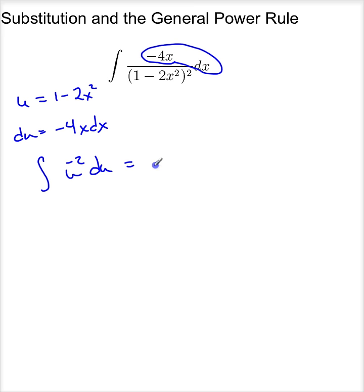So this is u to the negative 1 divided by negative 1 plus c. So it's minus 1 over u plus c. So it's minus 1 over 1 minus 2x squared plus c.